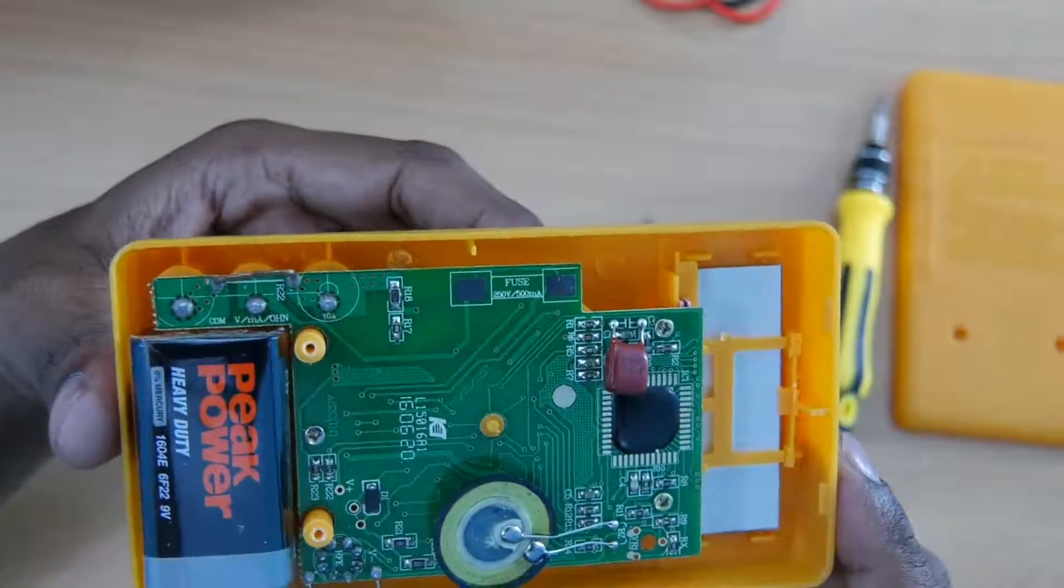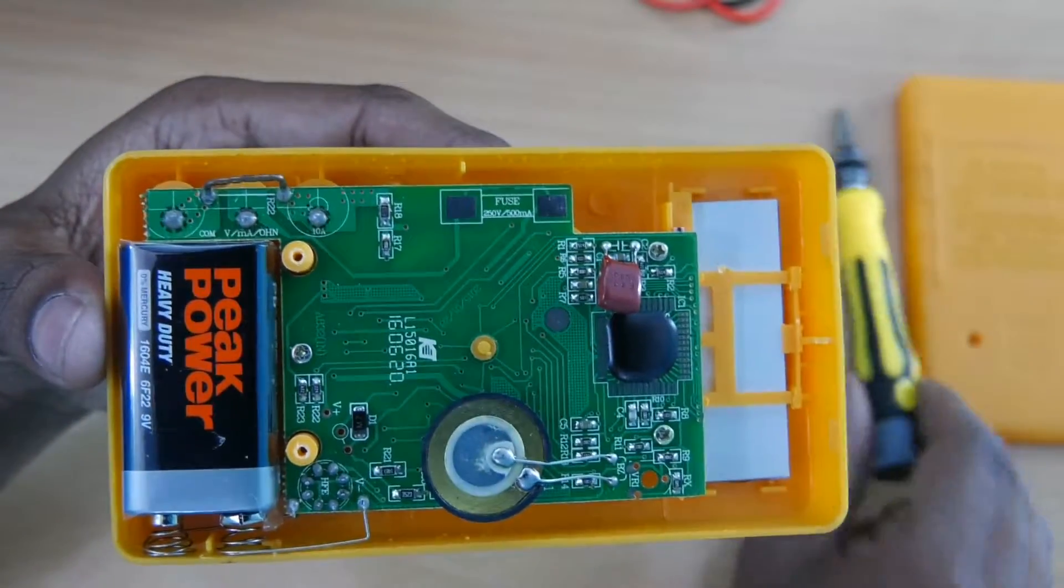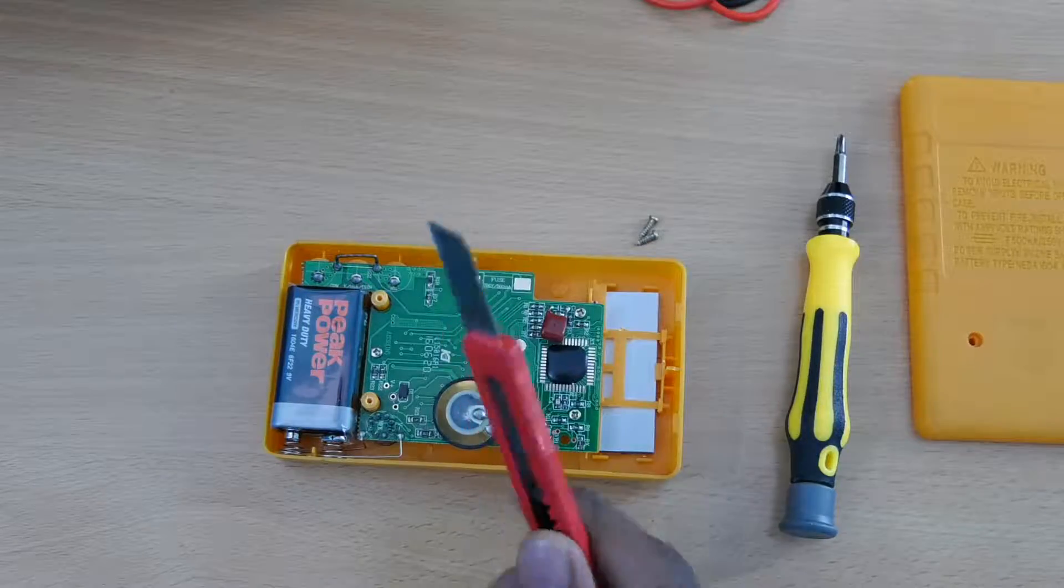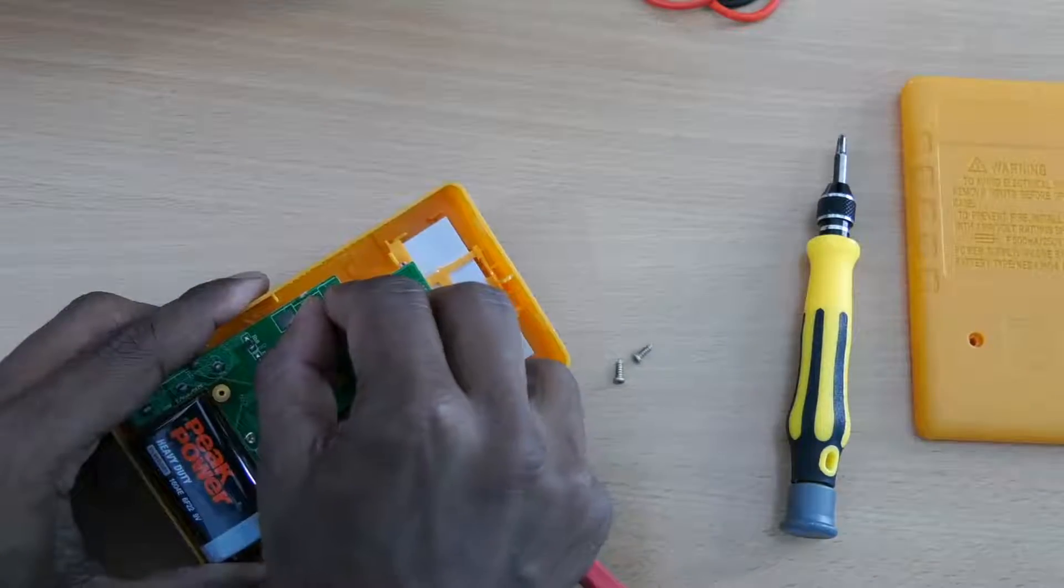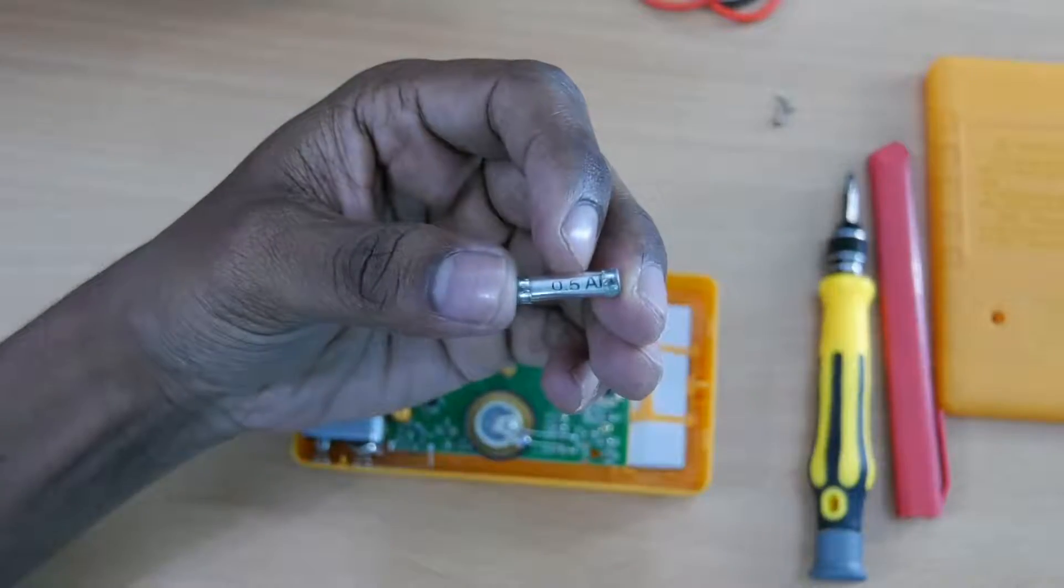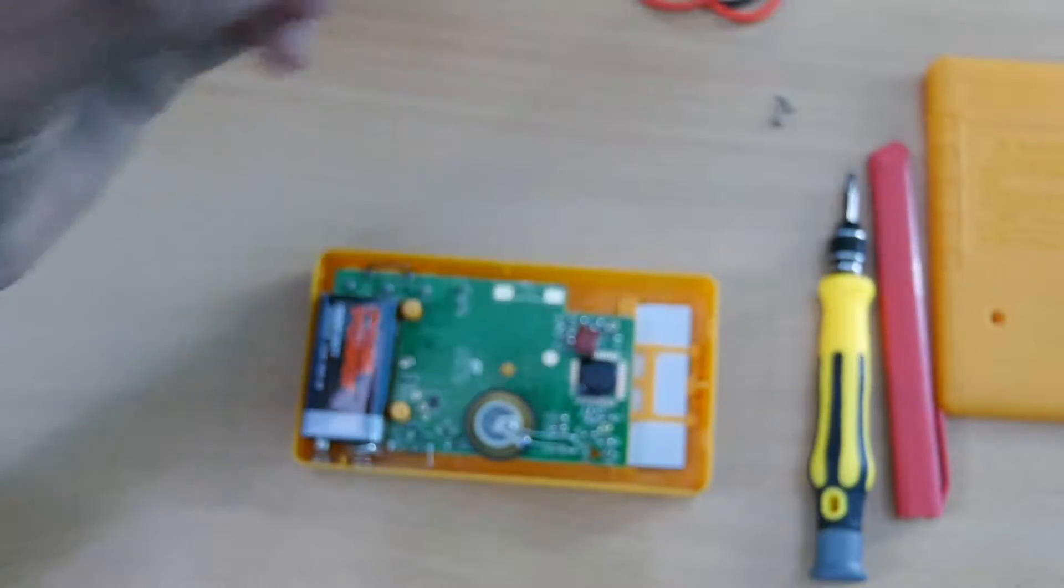But instead of a fuse, this is shorted by thin PCB traces. So first you have to remove this shorting. Use any knife to scratch it off to disconnect the shorting.